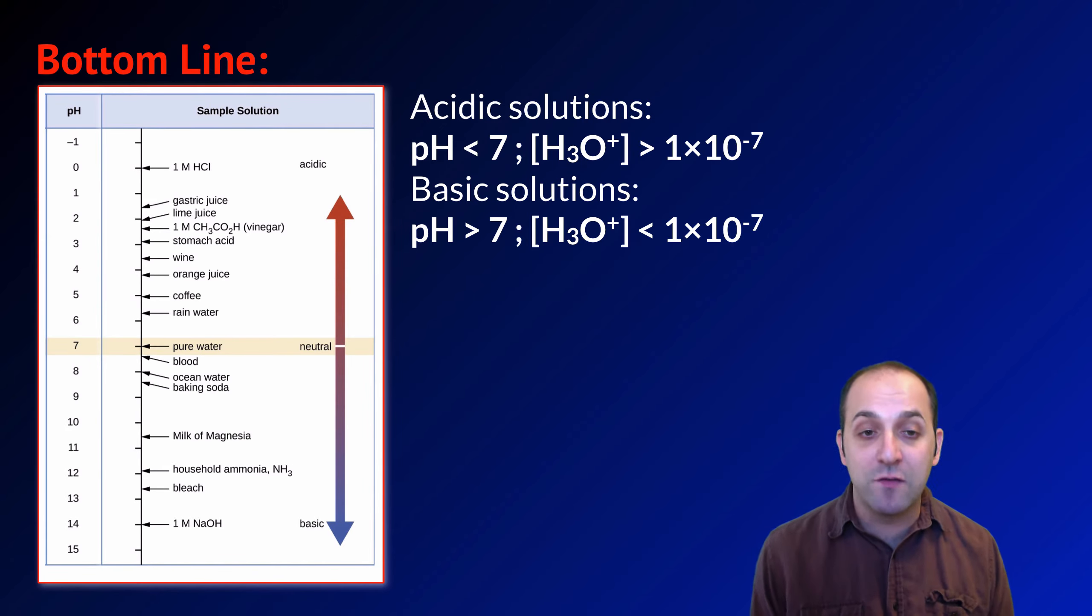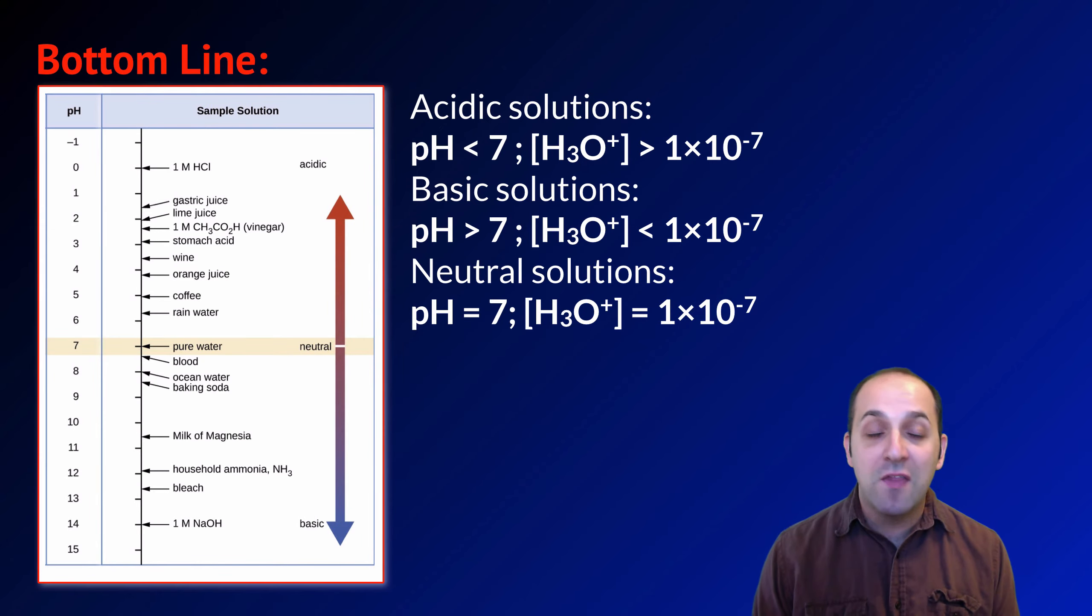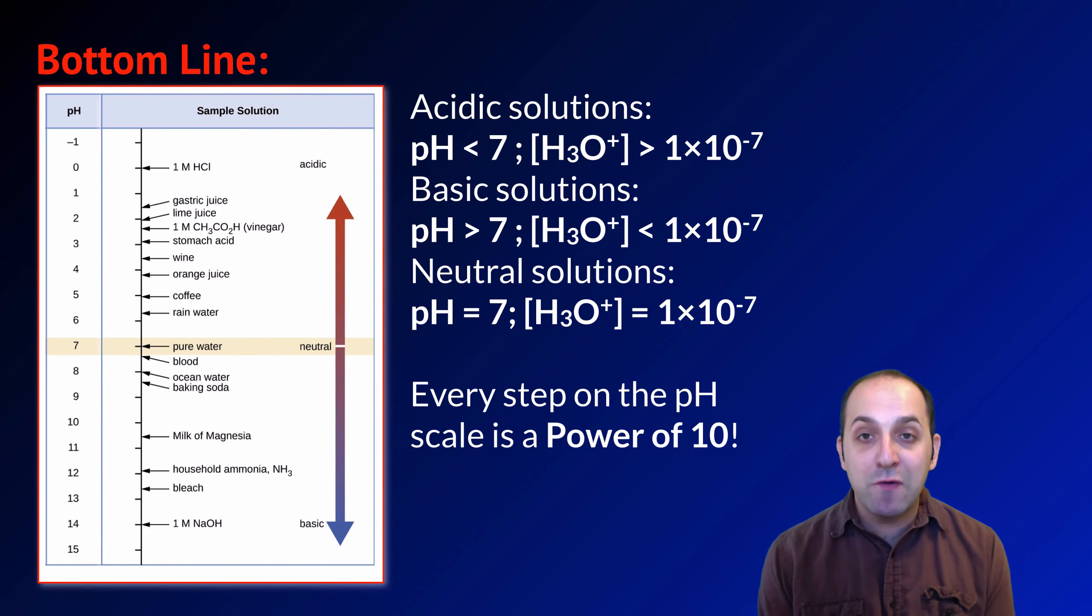For neutral solutions, the pH has to equal 7. The concentration of H3O plus is equal to 1 times 10 to the negative 7, and the concentration of OH minus is also equal to 1 times 10 to the negative 7. And of course, let's stress again that every step on the pH scale is a power of 10.